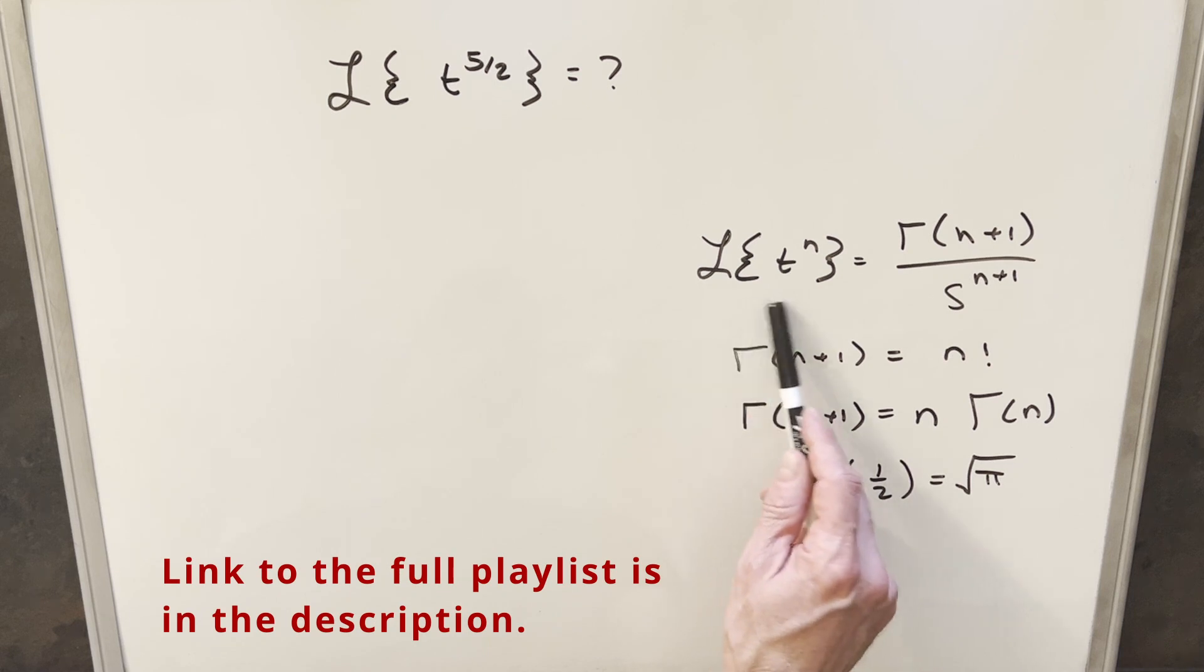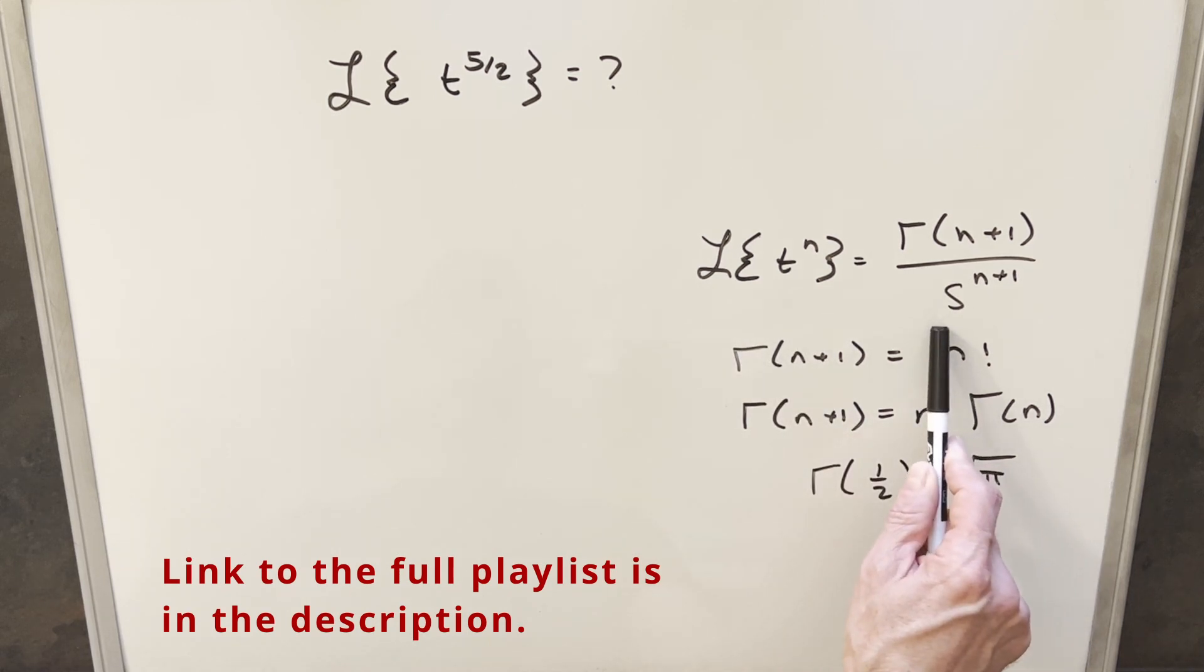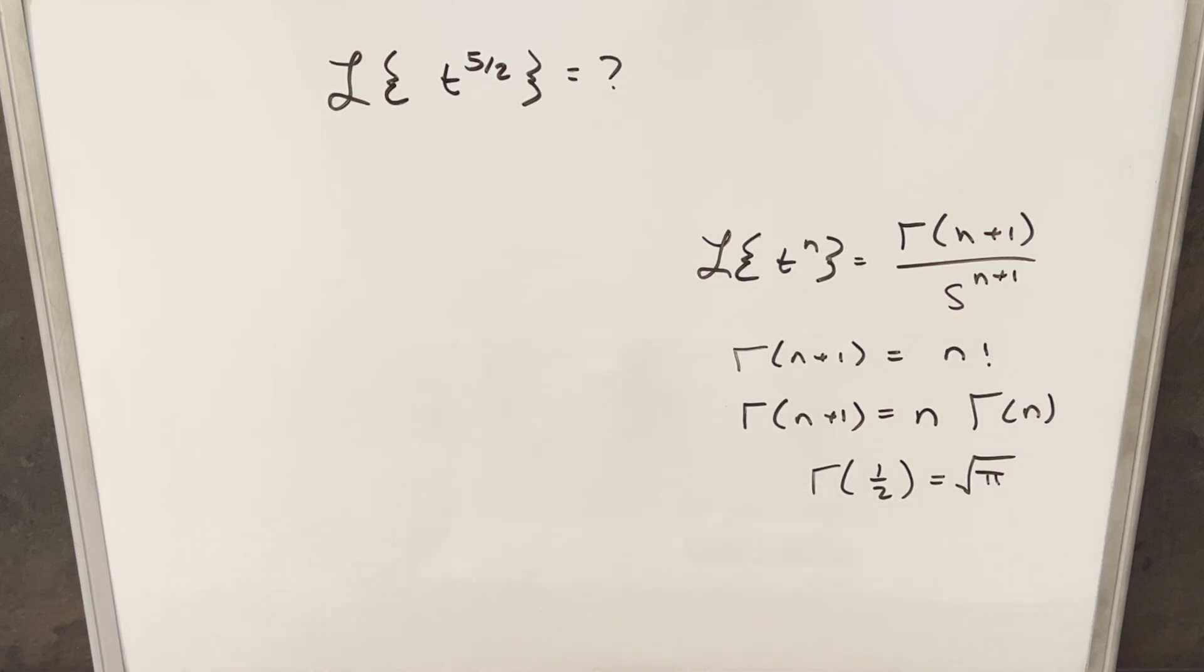In the previous video, we found this general formula for the Laplace transform of t to the n, and we expressed that in terms of the gamma function, but we have some other useful formulas here that's going to help us with the gamma function. So to get started with this, I'm just going to use my first formula here.